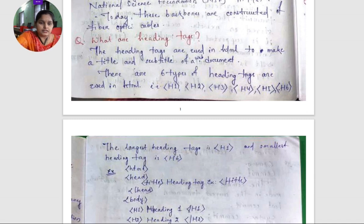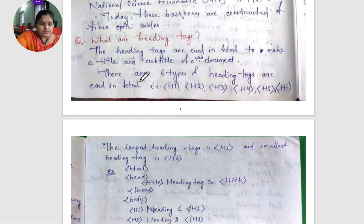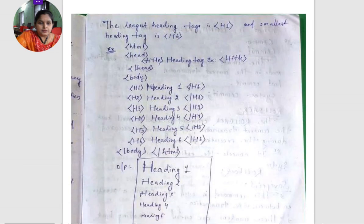The next question is: what are heading tags? Heading tags are used in HTML to make a title and subtitle of a web document. There are six types of heading tags used in HTML: h1, h2, h3, h4, h5, and h6. The largest heading tag is h1 and the smallest heading tag is h6.